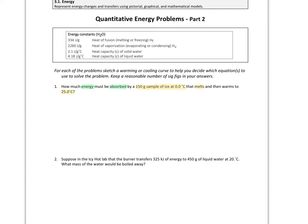In this first example, we need to find the amount of energy that must be absorbed by a 150-gram sample of ice at zero degrees Celsius that melts and then warms to 25 degrees Celsius. Before we solve this, let's sketch out the heating curve to see what's really going on. We start at zero degrees Celsius as ice, melt, and then go up to 25 degrees Celsius.